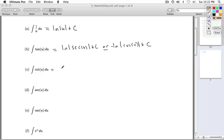The integral cotangent u du, natural log absolute value sine of u plus c, or negative natural log absolute value cosecant u plus c. Either is acceptable.